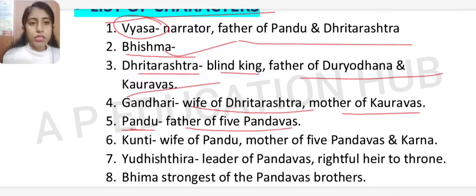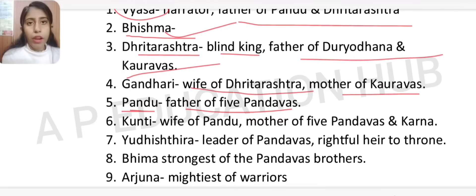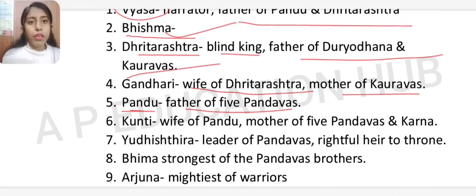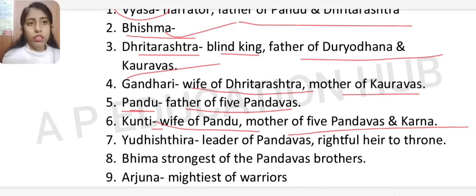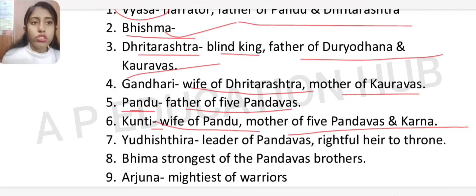Pandu's five sons are not his biological sons — we will see the reason in the synopsis. Kunti is the wife of Pandu and the mother of three of the five Pandavas, as well as the mother of Karna. Karna is the son of Suryadeva, the Sun God, born before Kunti's marriage.